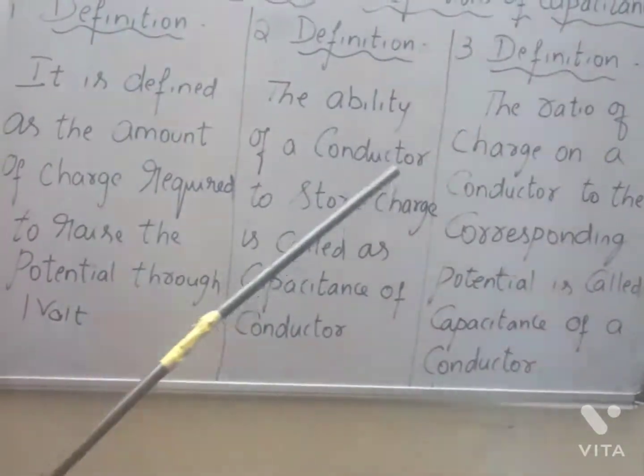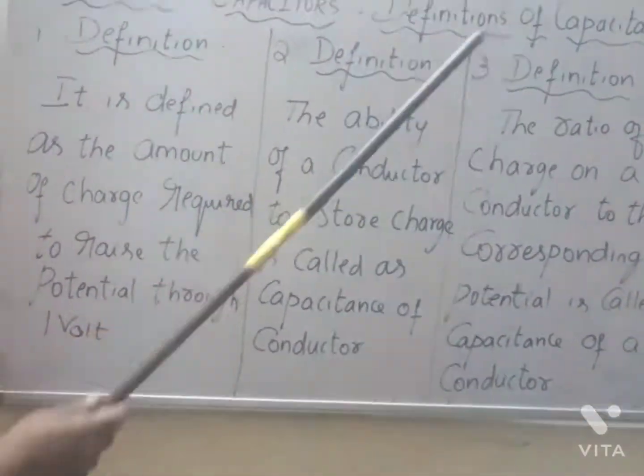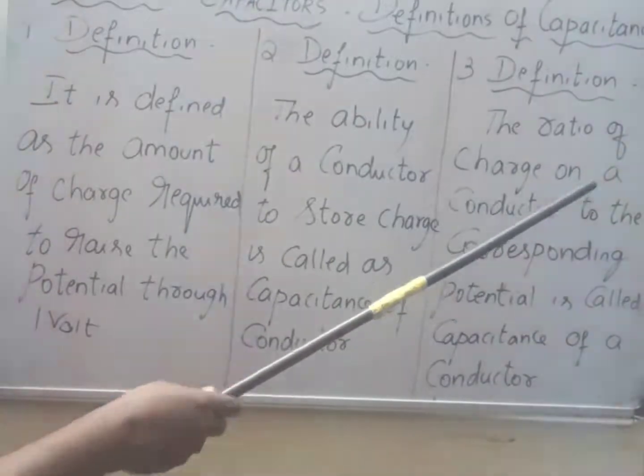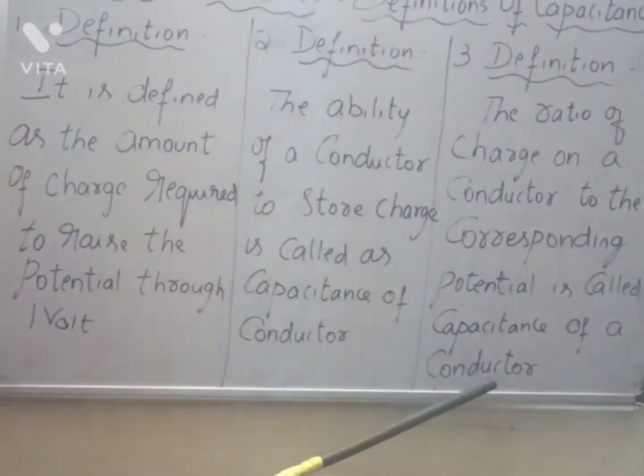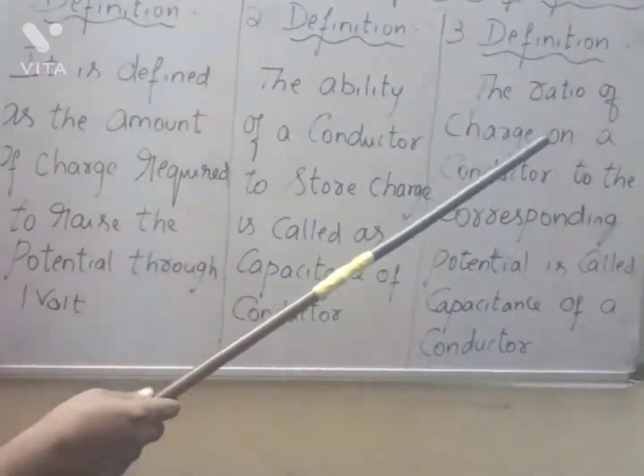Third definition: The ratio of charge on a conductor to the corresponding potential is called capacitance of a conductor. That is, C = Q/V.